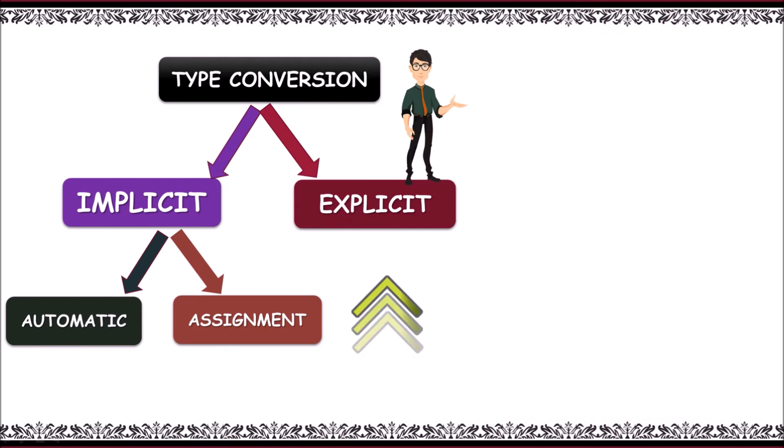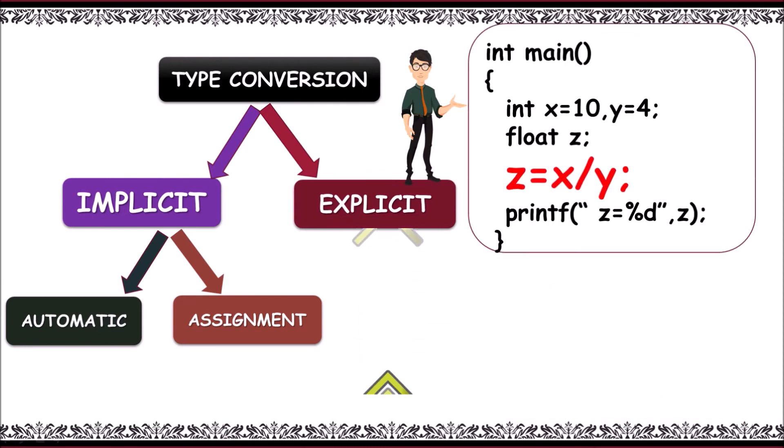Next, here, z is equal to x by y, x is integer, and y is integer. So, x by y is an integer. Int value is stored in z as float value, that is, 2.000.